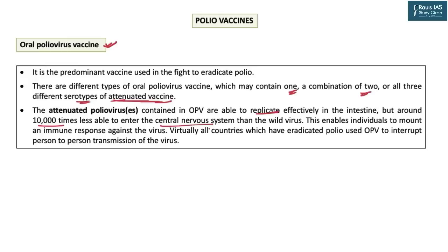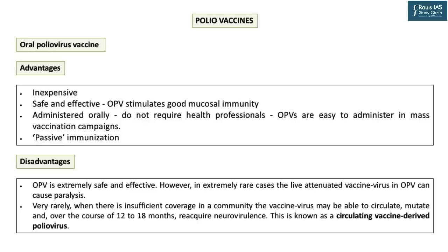This enables individuals to mount a powerful immune response against the virus. Live attenuated vaccines give the highest amount of immunity. All countries that have eradicated polio have used oral polio vaccine because it is easy to administer, easy to handle, does not require specialized medical professionals or injections and syringes, and is inherently inexpensive. It is also safe as oral polio vaccine stimulates good mucosal immunity, making it very effective in interrupting virus transmission. Vaccinated children's guts won't allow virus multiplication, so the risk of it leaking through stool and causing community spread is also reduced.